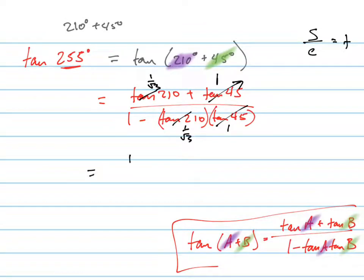So let's just rewrite it down here. So I've got 1 over root 3 plus 1 all over 1 minus 1 over root 3 times 1.